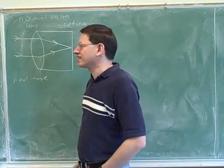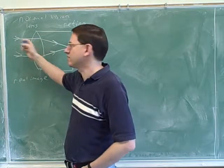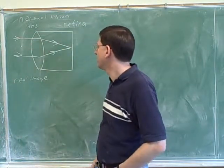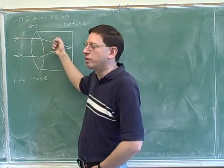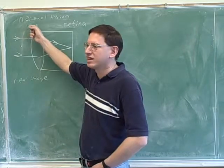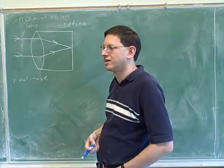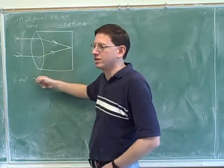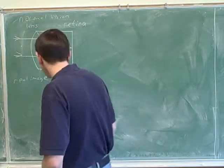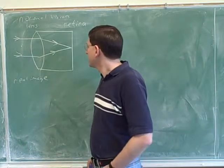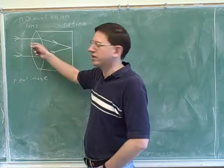Light goes into your eyes — unlike Superman's heat vision where light beams go out. So the outgoing light we're talking about is the light going out from the lens, which is on the right. The image is on the same side as that outgoing light, so this really is a real image. And the lens of the eye is converging — I drew it converging, but how do we know?